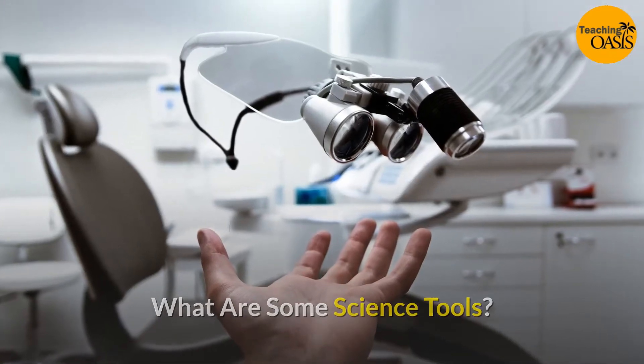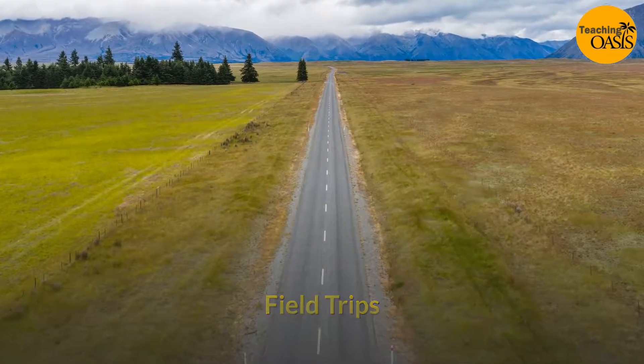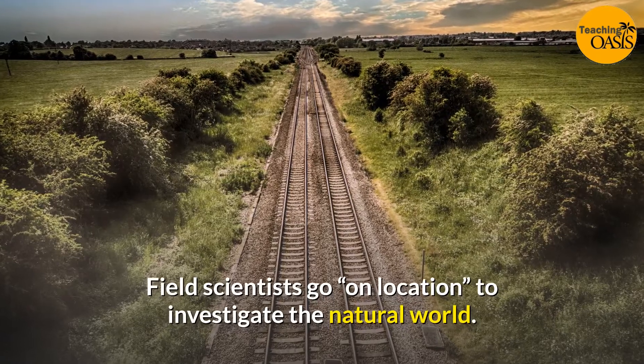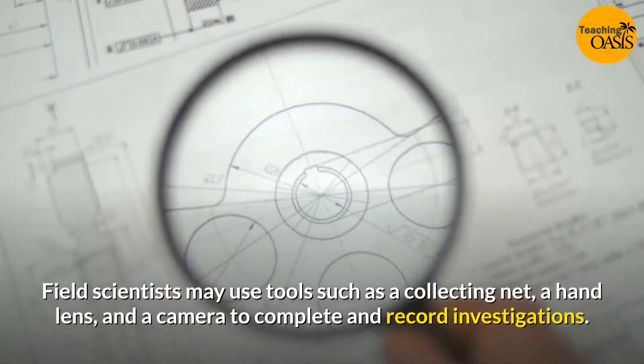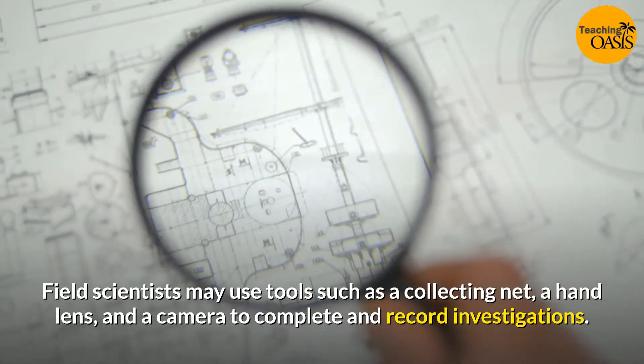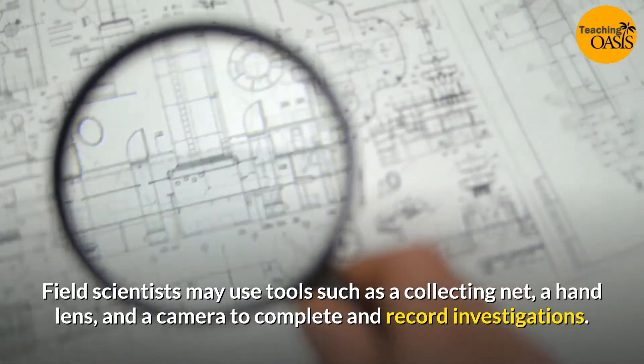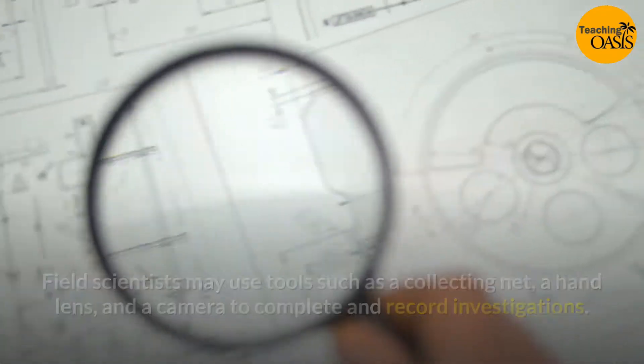What are some science tools? Field scientists go on location to investigate the natural world. Field scientists may use tools such as a collecting net, a hand lens, and a camera to complete and record investigations.